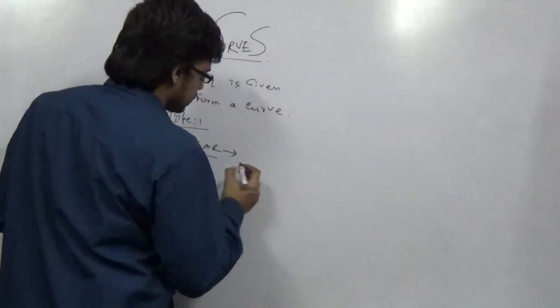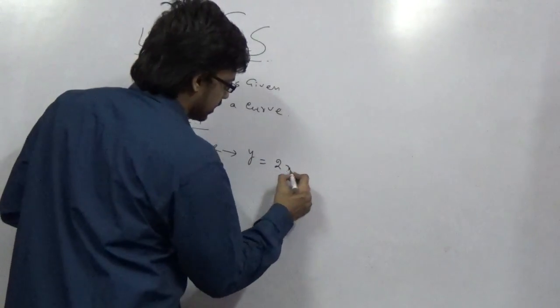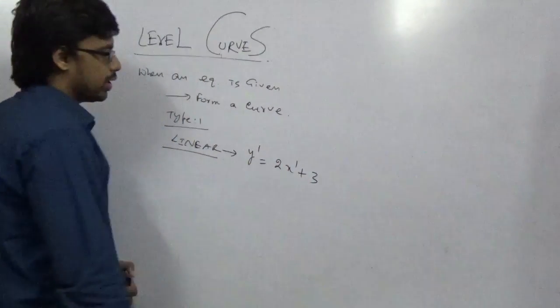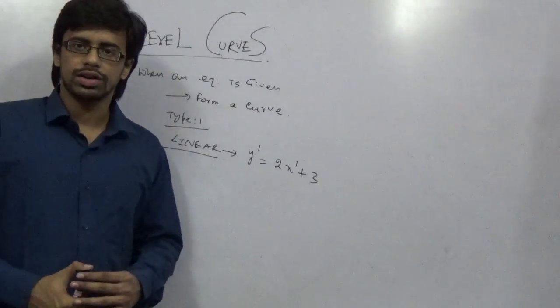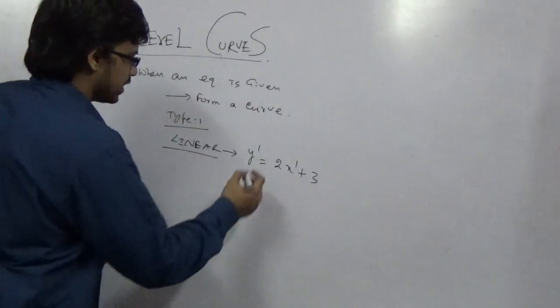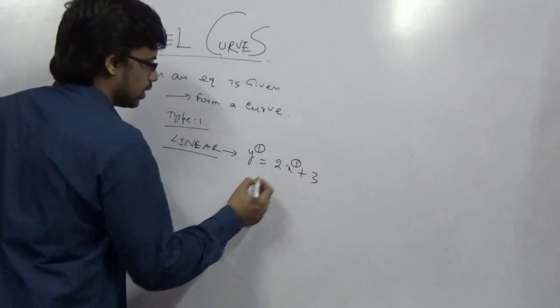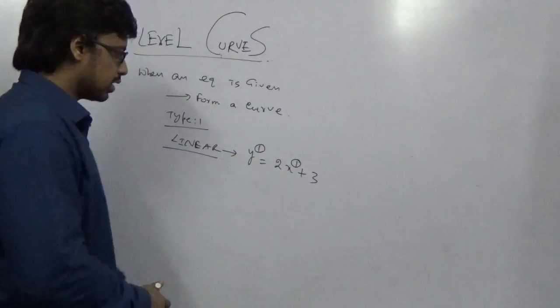The identification process is y equal to 2x plus 3. This one is a linear curve. When all powers are 1, you can call it a linear curve. For example here these two powers are 1 so we can call it a linear curve.